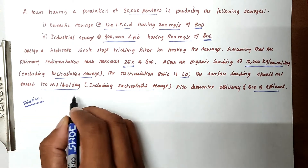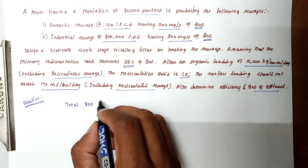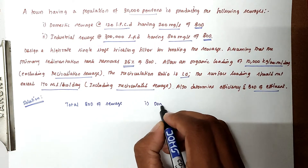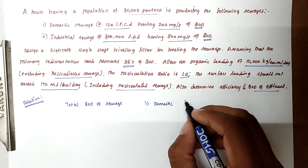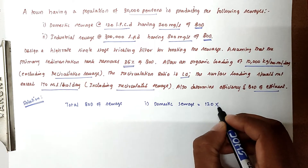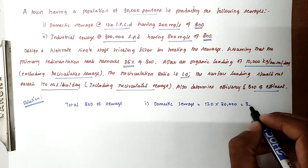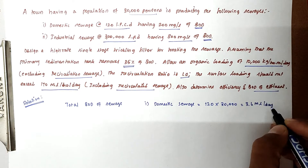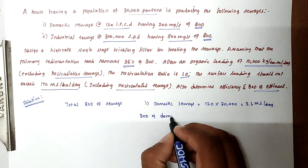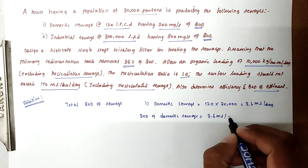The first step is to find out the total BOD of sewage. For domestic sewage, the total quantity equals 120 liters per capita per day into 30,000 persons, giving us 3.6 million liters per day, which is 3.6 × 10³ cubic meters per day.